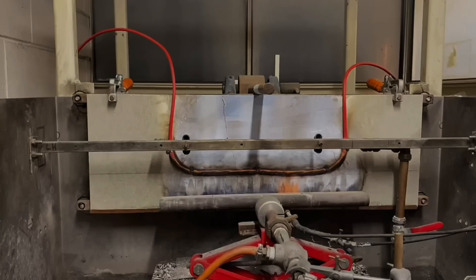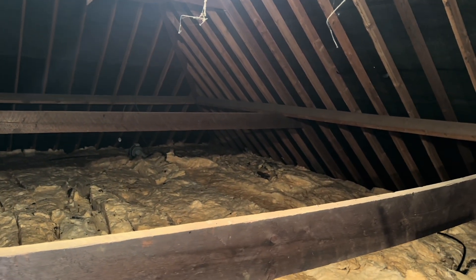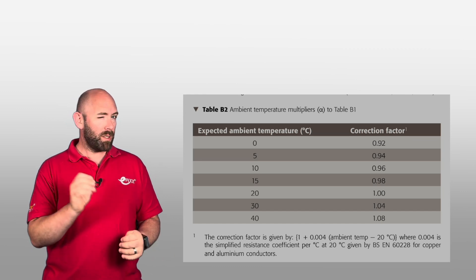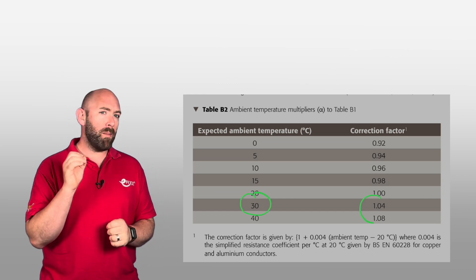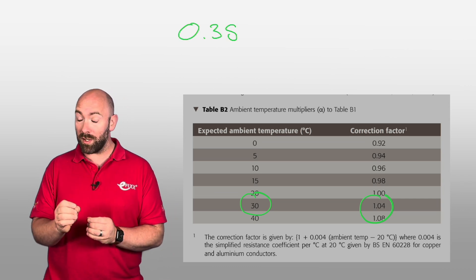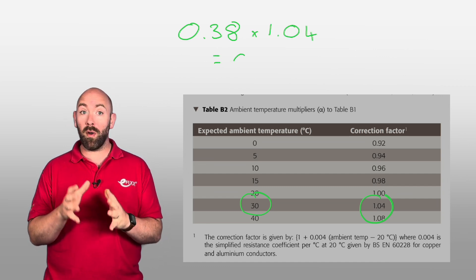These values are stated with the cable at 20 degrees Celsius, and temperature can have a significant impact on resistance — the hotter a cable, the higher the resistance. So if your cable is installed in a location with an ambient temperature of 30 degrees, the resistance is going to be higher. Table B2 gives us ambient temperature multipliers for Table B1. So if our cable is in an area at 30 degrees Celsius, we multiply our 0.38 ohms by 1.04, which increases the resistance to 0.4 ohms.